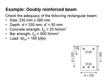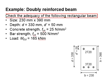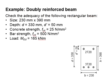This is an example to design a doubly reinforced beam. The question asks us to check the adequacy of the proposed rectangular beam design. The beam size is 230 by 390. The depth is 330 and the position of the compression reinforcement bar is 50. The concrete strength is 25 and the bar strength is 500 newton per millimeter squared, and the loading is 165 kilonewton meter.